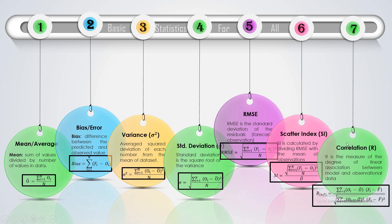The last one is correlation — one of the most famous parameters. It describes the linear relationship between two parameters or two datasets, such as forecasted data and observed data, just as described with bias or error. These are the seven basic and fundamental statistical parameters which we use everywhere and are mostly useful for everyone.